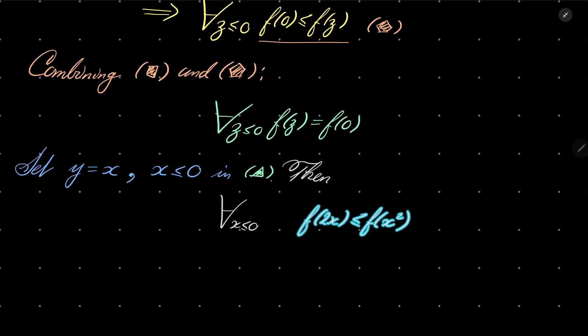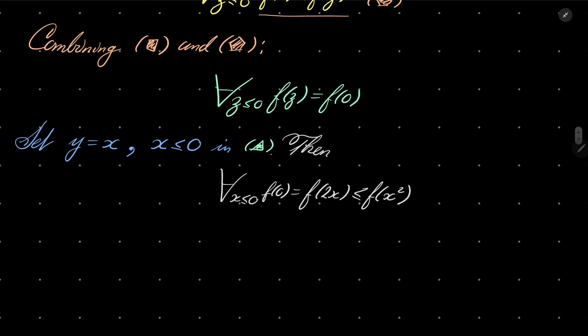But what is f(2x)? Well, by now we know that it is f(0) because x is non-positive. And again, every non-negative number can be written as x². So in fact, for every z greater than or equal to zero, f(z) is f(0).